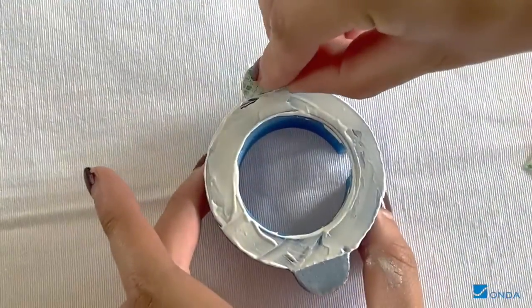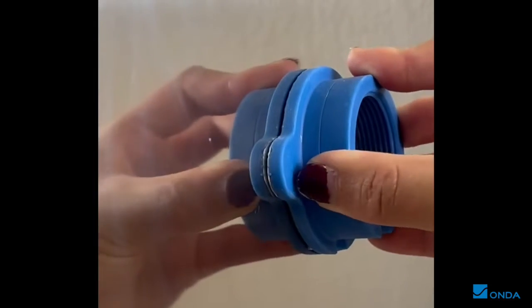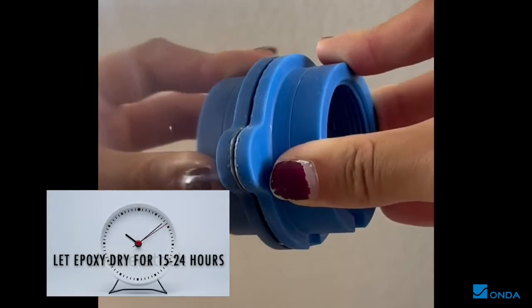Remove the adhesive tabs. Ensure the tank wall is clean and place the housing at the desired location. Allow 15 to 24 hours to fully cure.